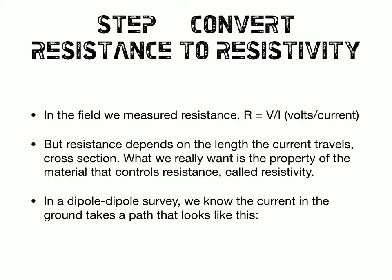Now, the measurement we actually made was voltage and current. And to calculate the resistance of the ground, you do the ratio of volts over the current. So what we wrote down in the field was actually the resistance.